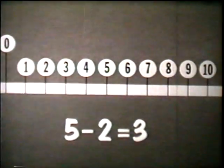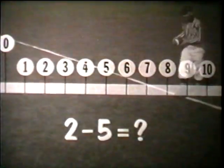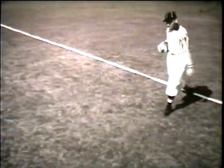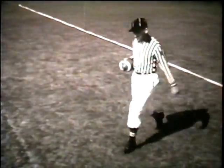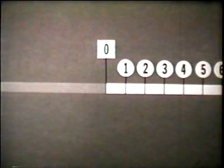But suppose the problem is two minus five. For instance, if a team is penalized five yards after a gain of two yards, how would you show this on the number line? You'd start at two and count back five. But you can see that this is not possible with just the numbers of arithmetic. How can it be done?